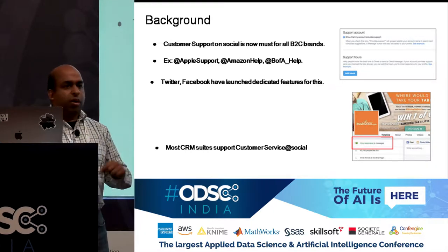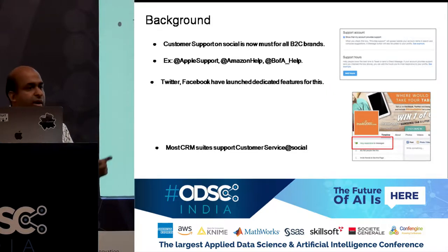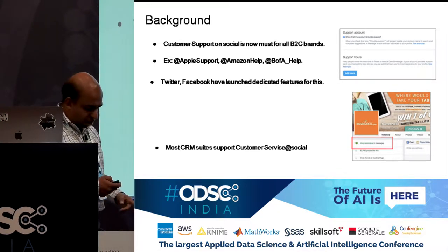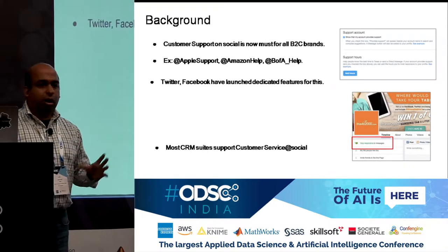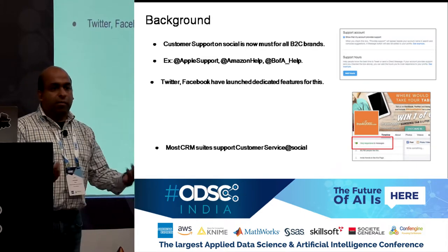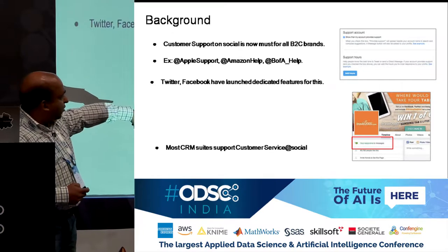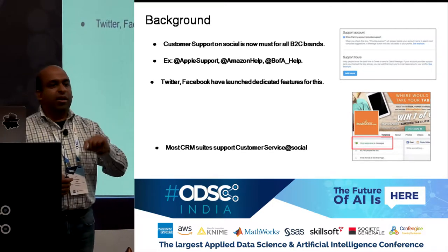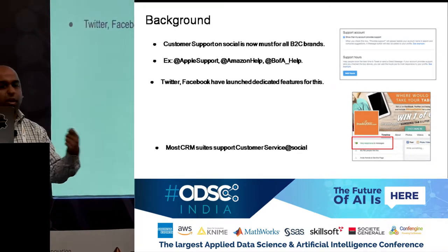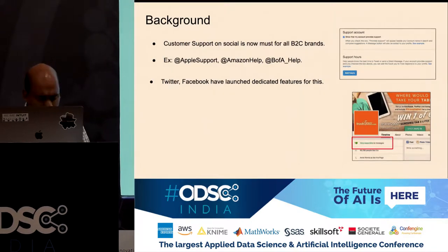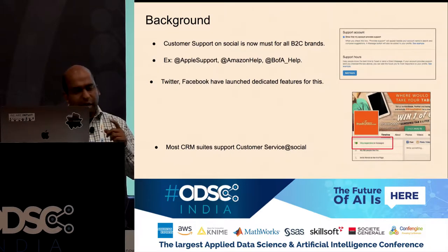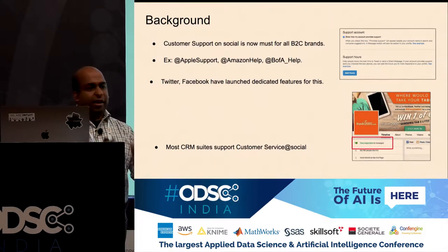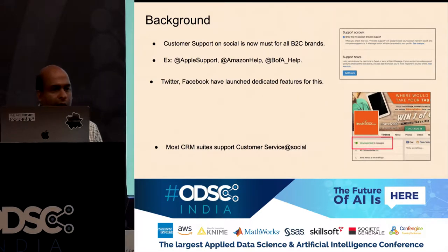Platforms like Twitter and Facebook have recognized this and launched dedicated features to support the ecosystem. On Twitter you can flag a handle as a support handle and specific tags appear. For Facebook, there's a 'Very Responsive' badge — if you respond to 90% or more of DMs within 15 minutes consistently, Facebook awards that badge to your page. Most CRMs today also support customer service on social with dedicated workflows to connect handles and respond.